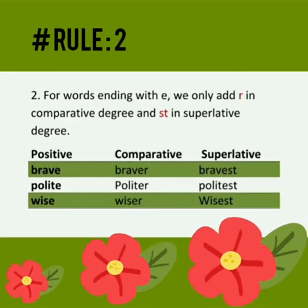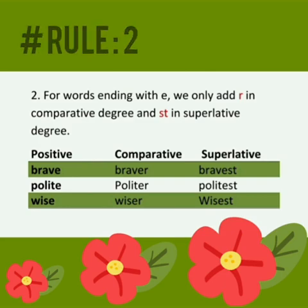For words ending with E, we only add R in comparative degree and ST in superlative degree. For example: brave, braver, bravest; polite, politer, politest; wise, wiser, wisest.